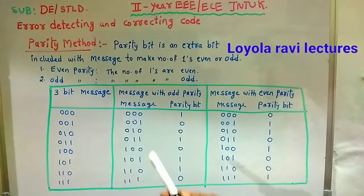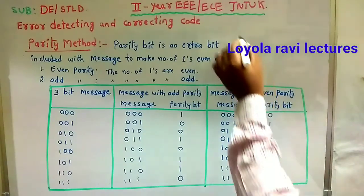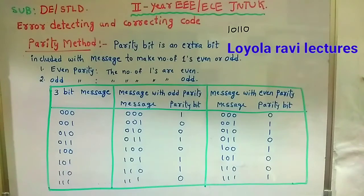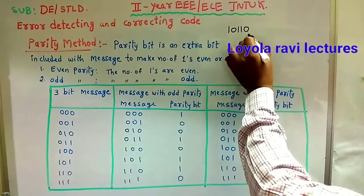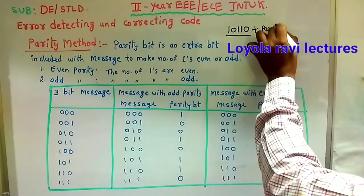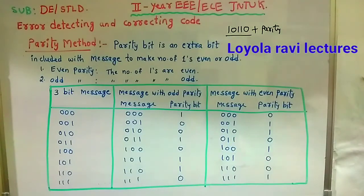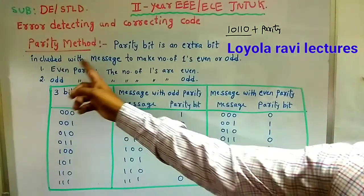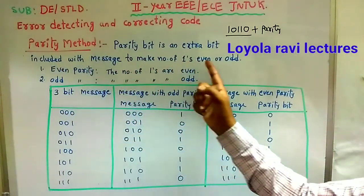So what is parity? Parity is nothing but adding an extra bit to the message. For example, if I am transmitting 10110, we add one extra bit called the parity bit and transmit it to the receiver. Adding an extra bit to the message is the parity bit. The parity bit is an extra bit included with the message to make the number of ones a specific order.